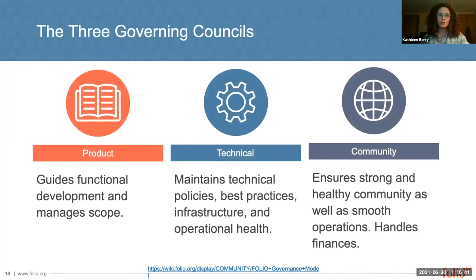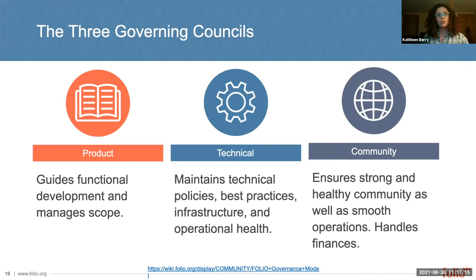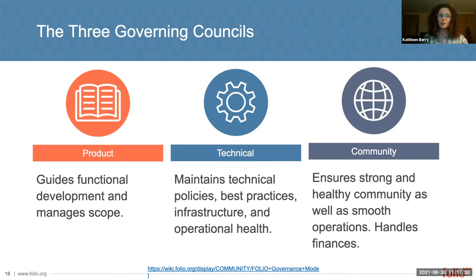Folio has three governing councils, and these councils communicate regularly to coordinate their work. Each can charter working groups to accomplish particular tasks. The Folio Product Council guides the functional development and manages the scope of the library services platform — they are responsible for providing the product vision, strategy, and roadmap. The Technical Council maintains the community's technical policies, best practices, infrastructure, and the operational health of the library services platform. The Community Council ensures the community is strong and healthy, responsible for smooth operation of community activities, ensuring the community is collaborative and inclusive, and managing the project's financial responsibilities.